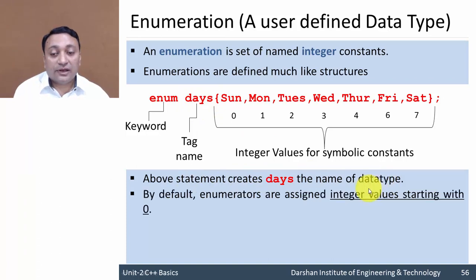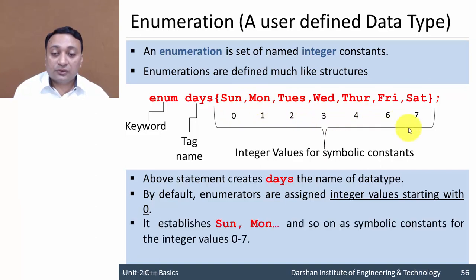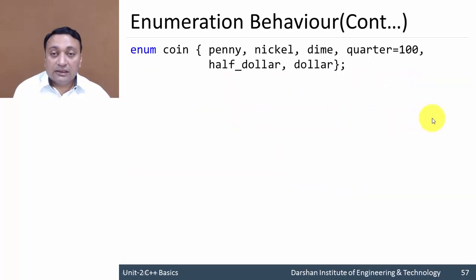The above statement creates 'days' as the name of a new user-defined data type. By default it enumerates and assigns value 0, then 1, 2, 3, 4 and so on to the symbolic constants Sunday, Monday, and so on — representing integer values 0 through 7.